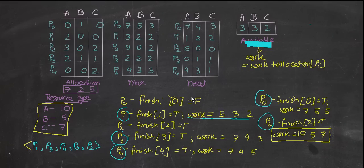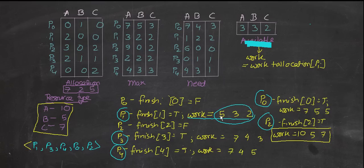For P2, we need 6,0,0 but have 5,3,2 — not enough for resource A (need 6, have 5), so P2 is false. For P3, we need 0,1,1 and have 5,3,2 — possible. Work becomes 5,3,2 plus P3's allocation of 2,1,1, giving 7,4,3. For P4, we need 4,3,1 and have 7,4,3 — enough. Work becomes 7,4,3 plus P4's allocation of 0,0,2, giving 7,4,5.